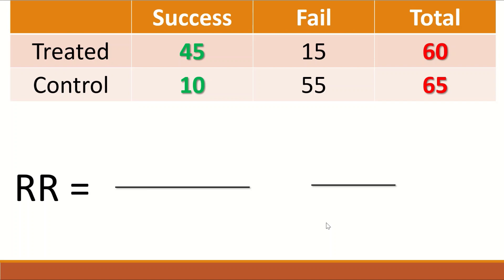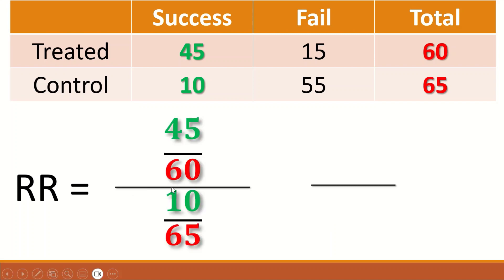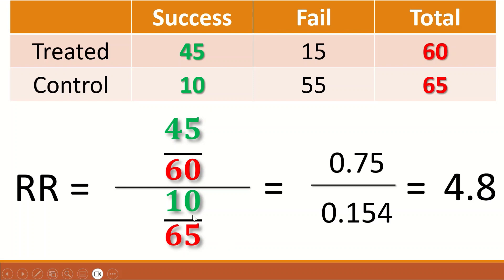To calculate the risk ratio: risk ratio equals the risk of the exposed divided by the risk of the unexposed, or the risk of treated divided by the risk of control. The event in the treated group is 45 cases divided by the total population at risk, which is 60. For the control, the number of cases is 10 divided by the population size at risk, which is 65. When we divide these together, it gives a risk ratio of 4.8.